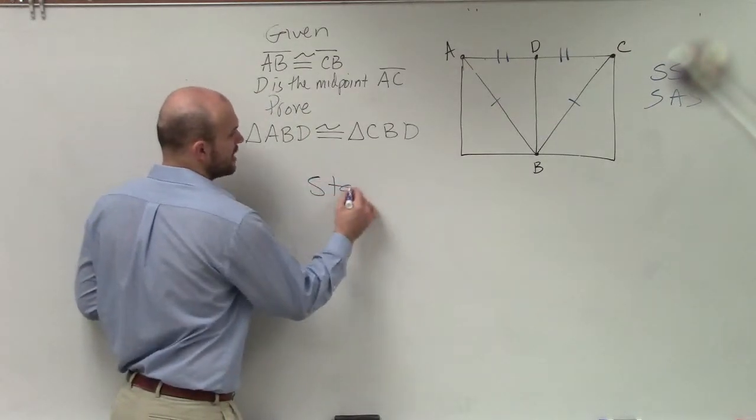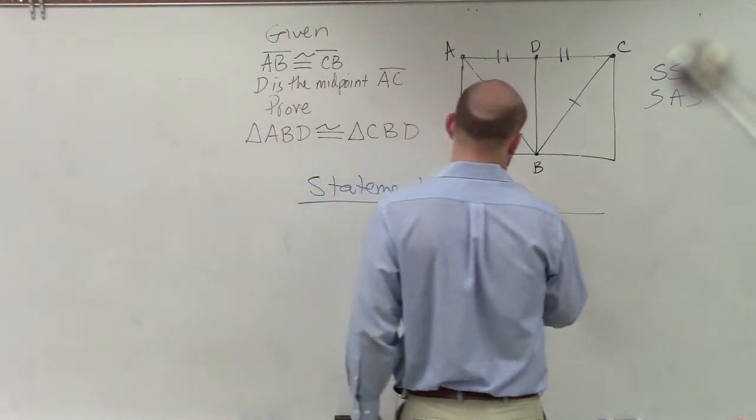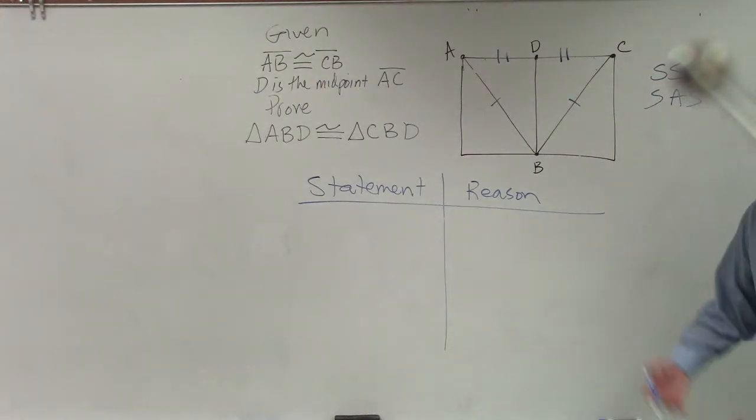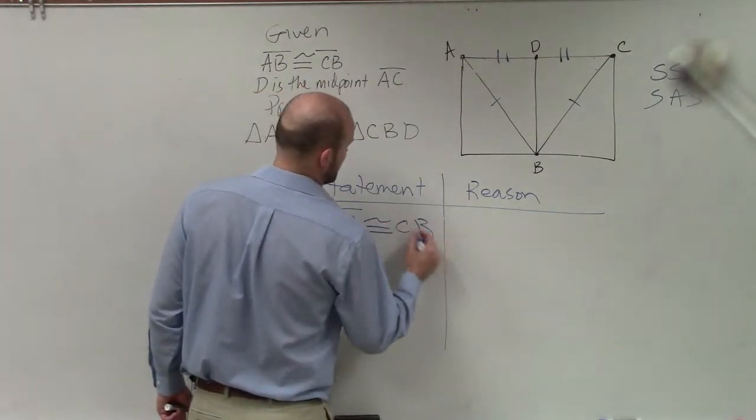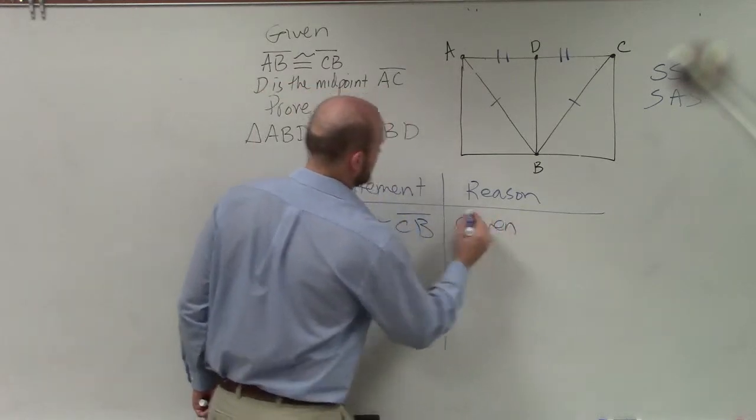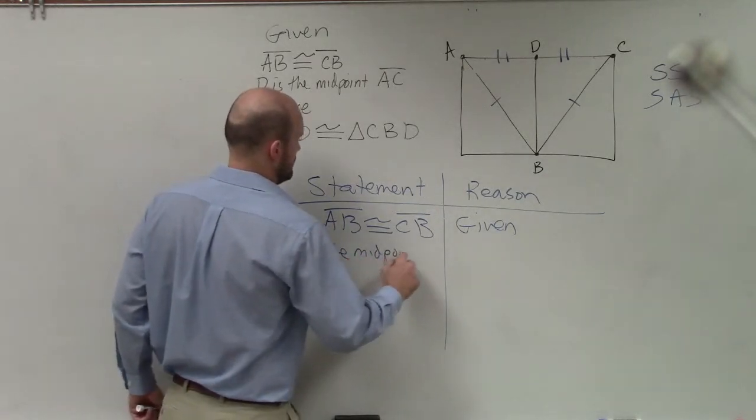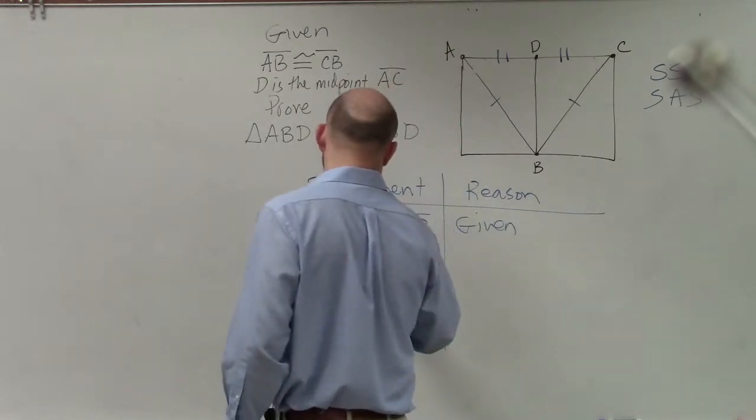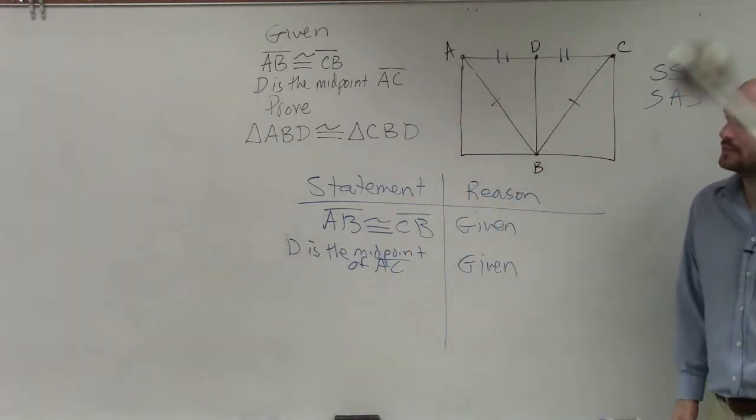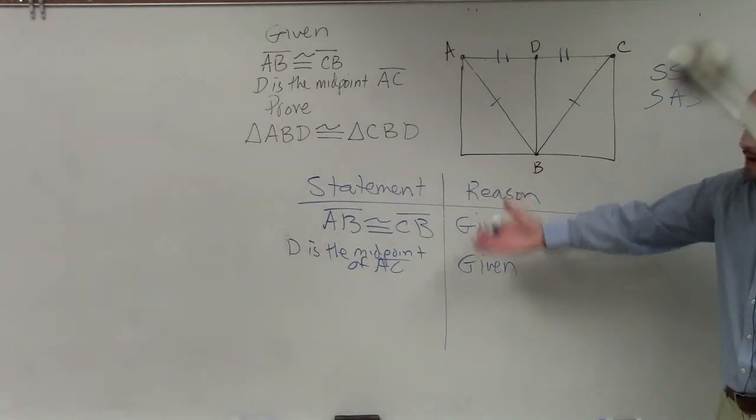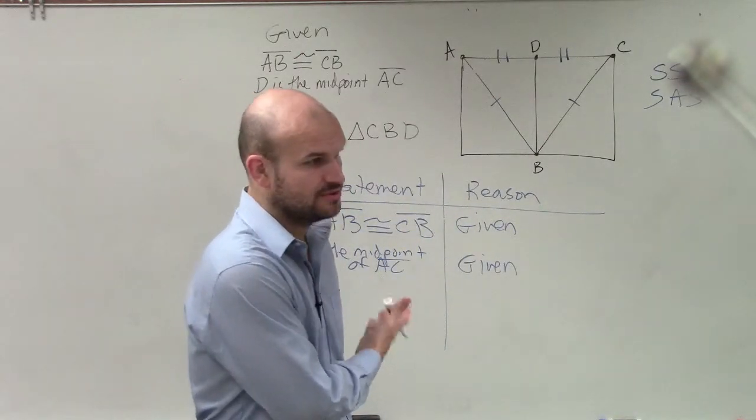So we set up our proof. Statement, reason. For all the proofs, once again, we write down our given information. AB is congruent to CB. Why do we know that? Because it's given. Then we say D is the midpoint of AC. Why do we know that? Because it's given. So once we know it's the given, now we need to write this down. For all of your homework, every single piece of your homework, at least you should have this amount done.